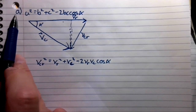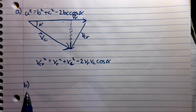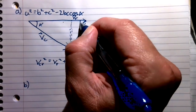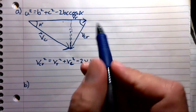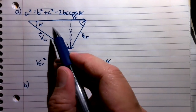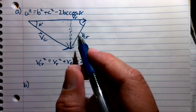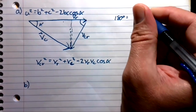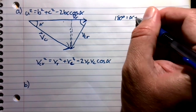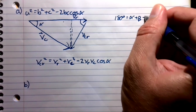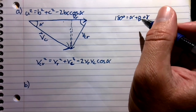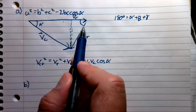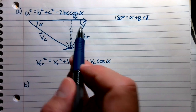That was Part A. Now we want to get to Part B. For Part B, we want to know the angle of our triangle. Now, if we knew the other two angles, we know that all three angles have to add up to 180. So 180 degrees has to equal alpha plus beta plus gamma. But we don't know the other angles, so we're going to have to figure out what this angle is.